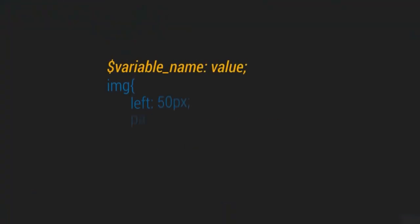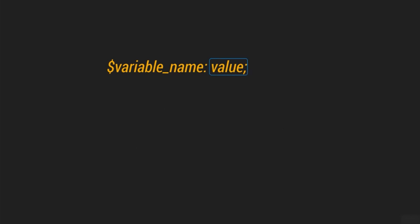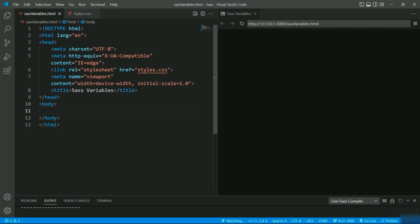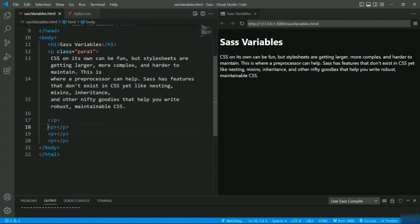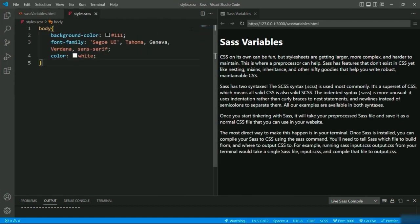SASS provides a feature called variables. Variables are used to store information that can be reused throughout the style sheet. You can store any CSS value — be it color, font stacks, width, padding, animation, or transition values. Before understanding the syntax, let's first see why we need variables by looking at an example. I'm defining a heading 'SASS Variables' and a few paragraphs inside the body, and I'll style them.